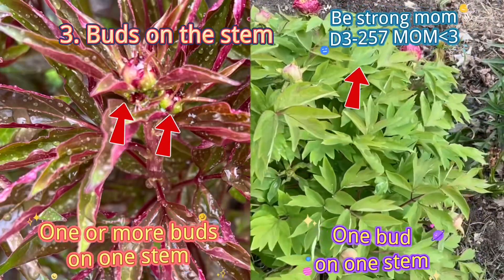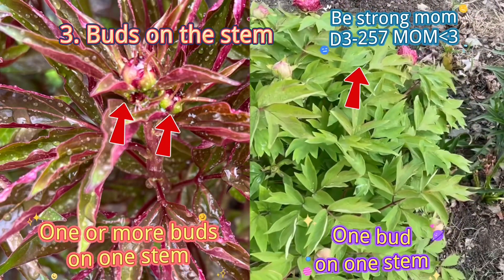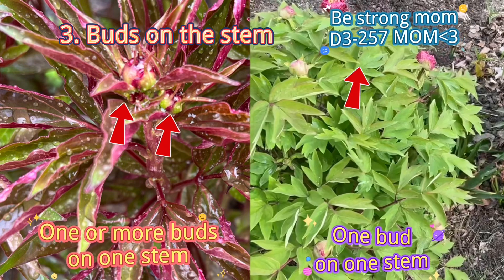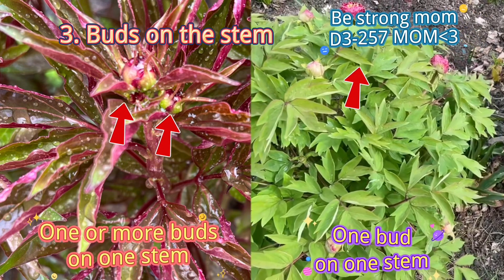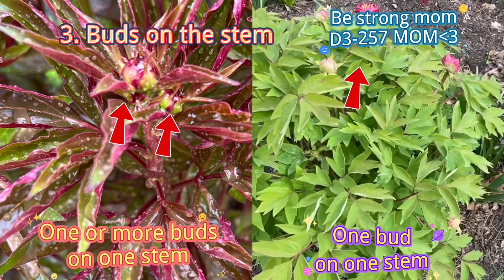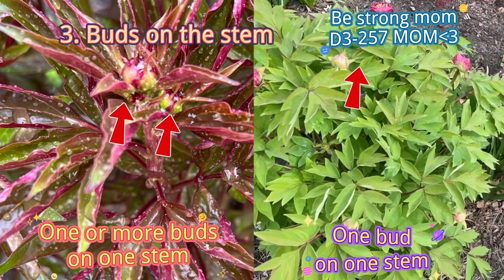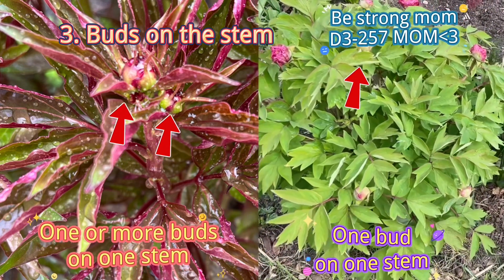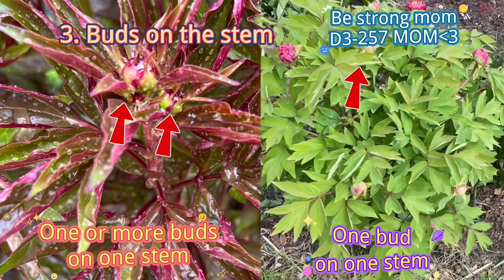The third one: buds on the stem. There can be one or more buds on one peony stem, but only one bud on one tree peony stem.